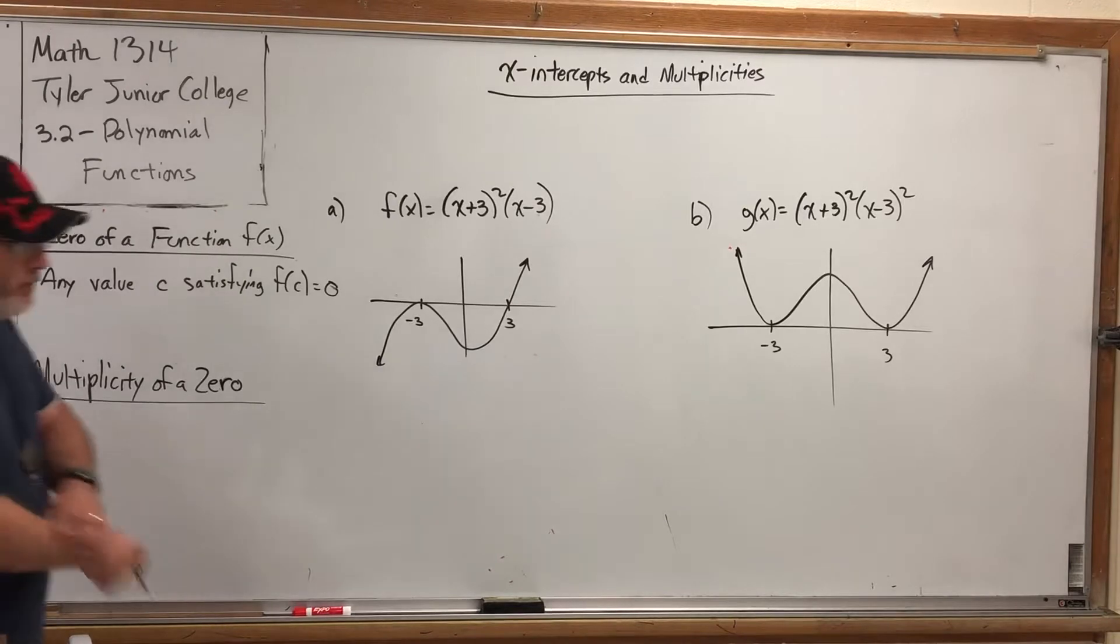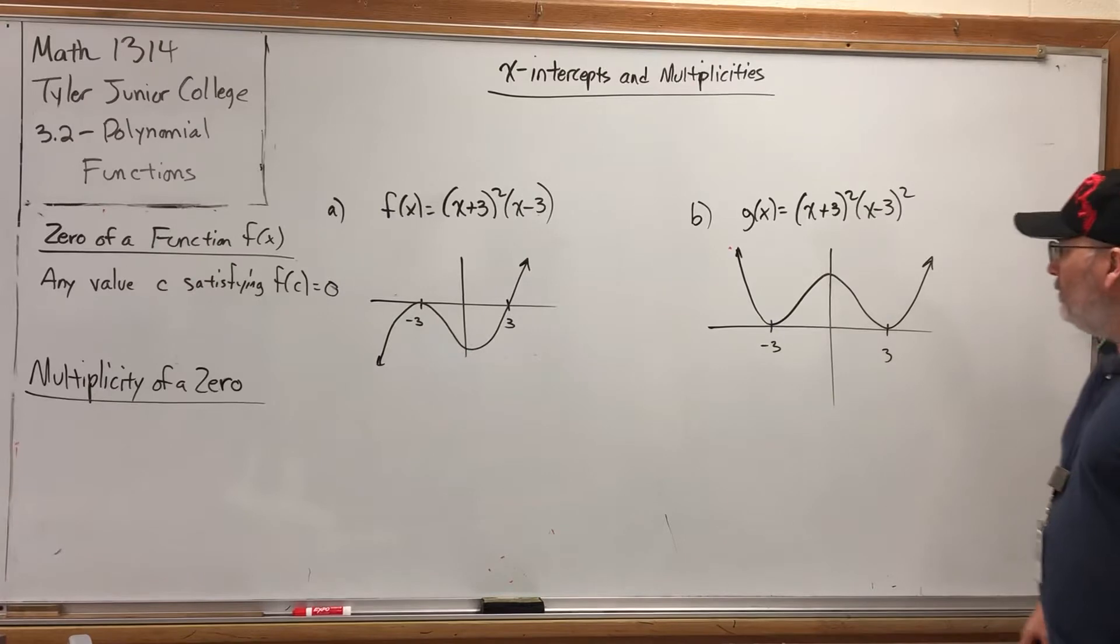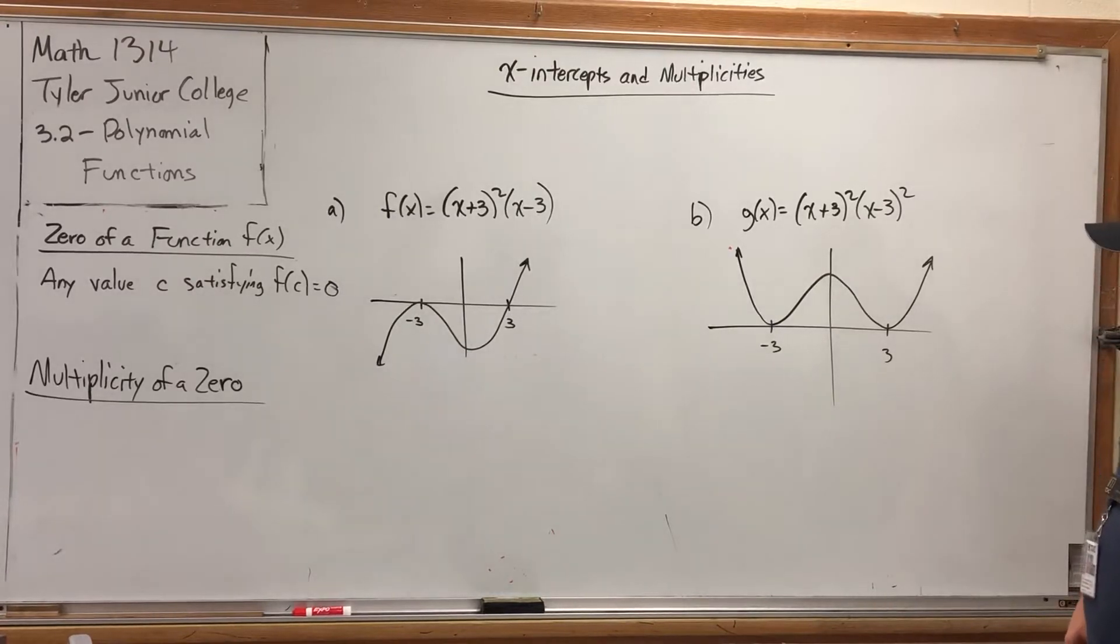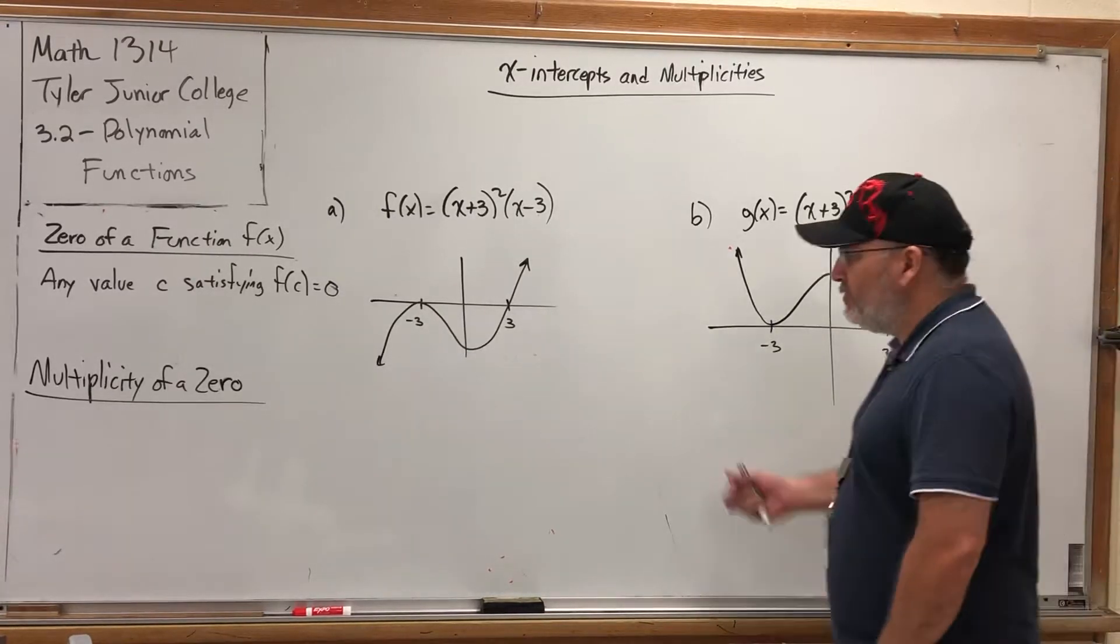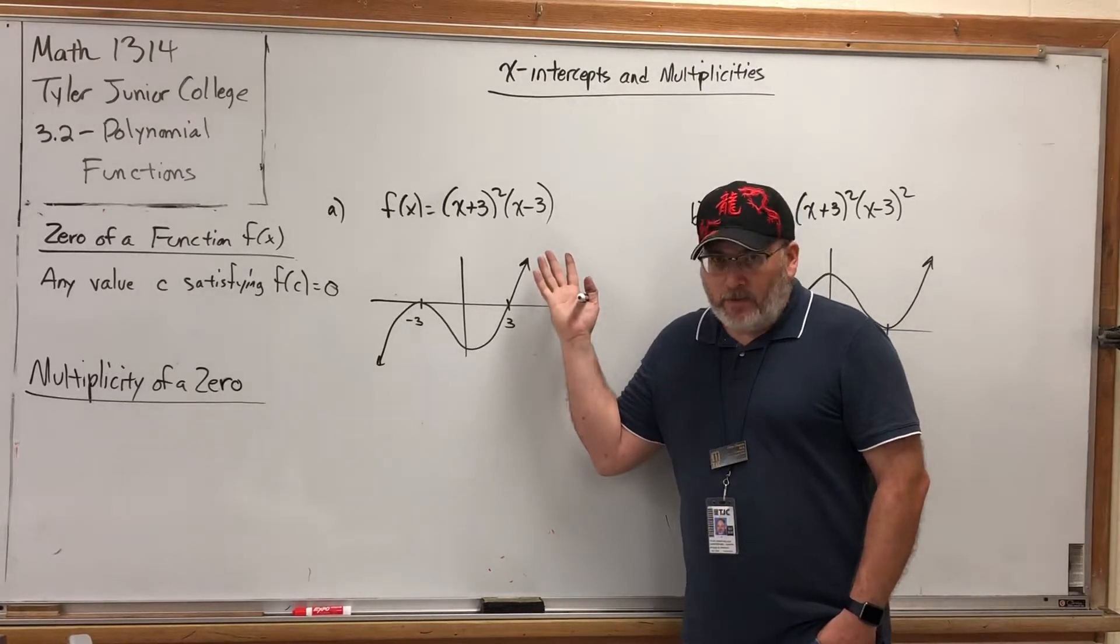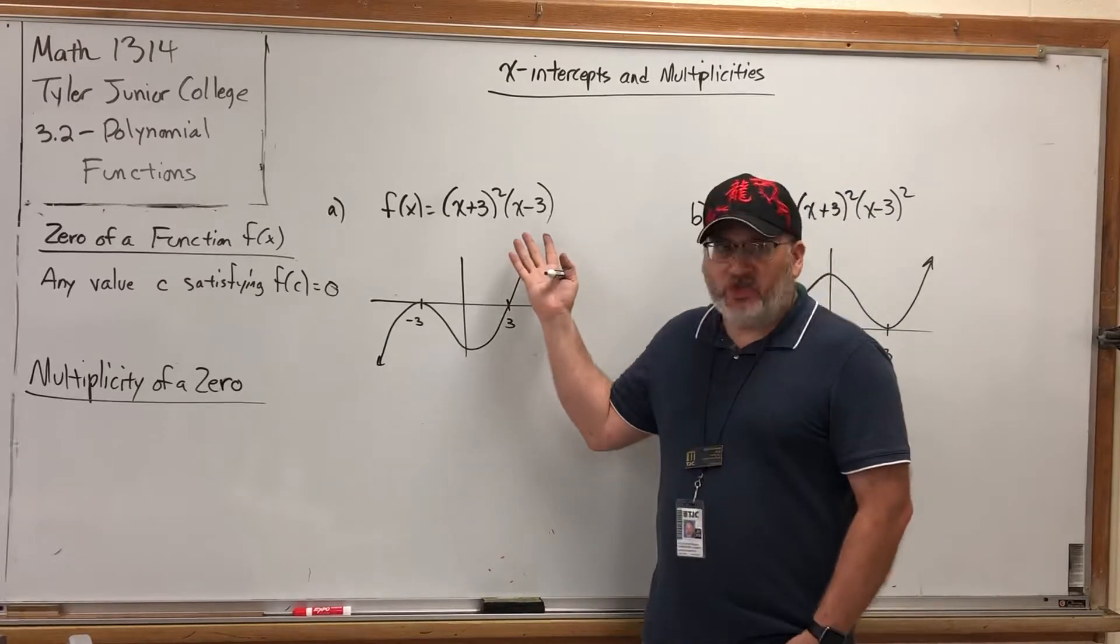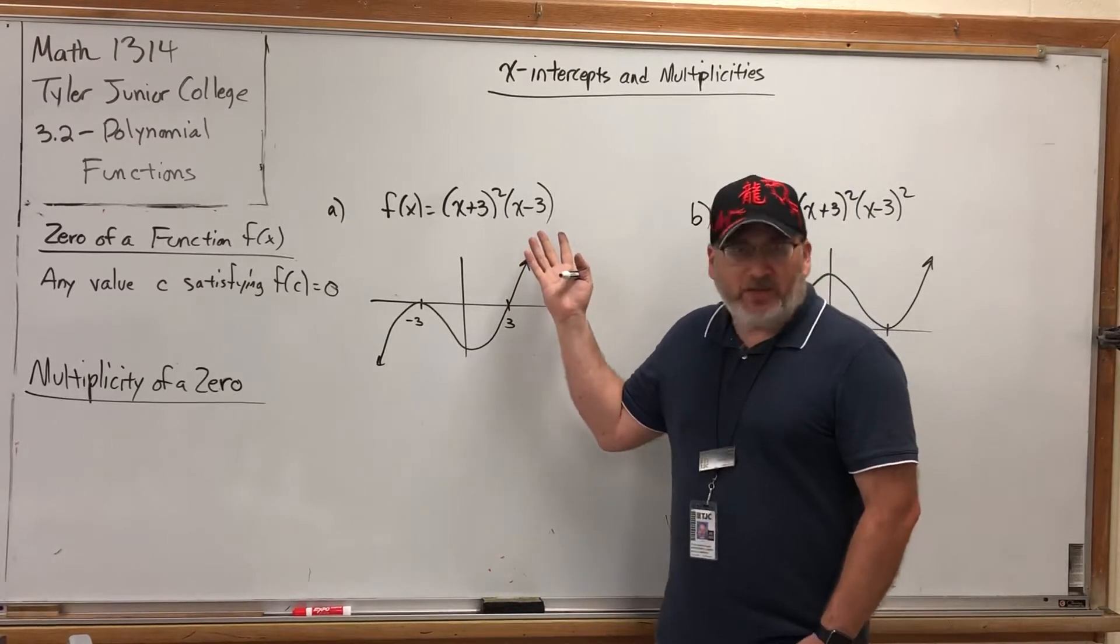On the board, you see two graphs that I concluded with at the end of the previous video, and the functions that are associated with them. Now these aren't the original functions that I started with, but rather they're factored forms. I believe this one was X to the third power plus 9X to the second power minus 3X minus 27.